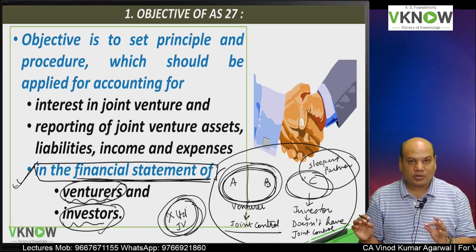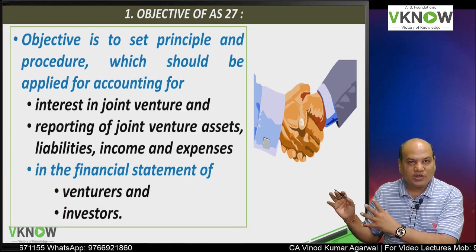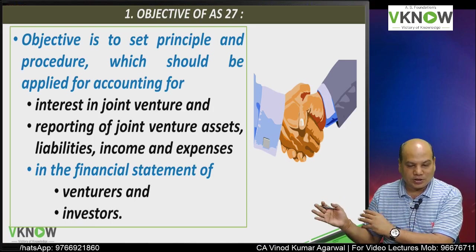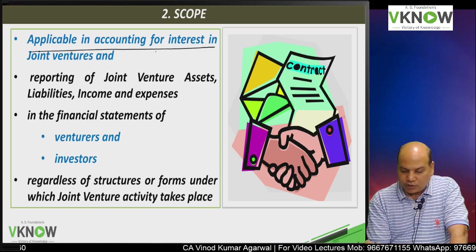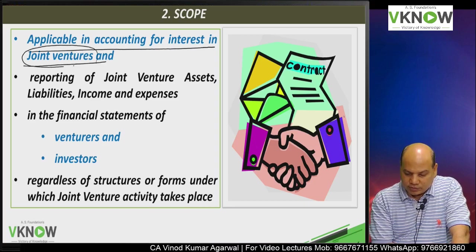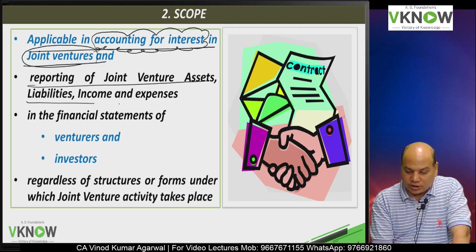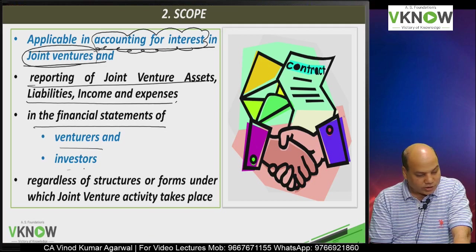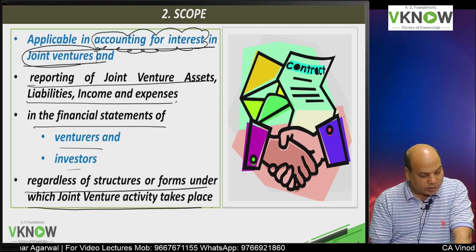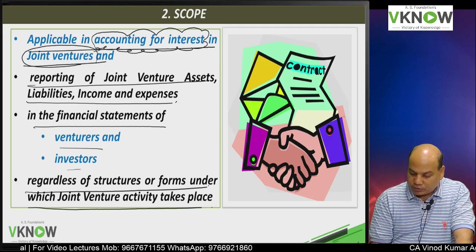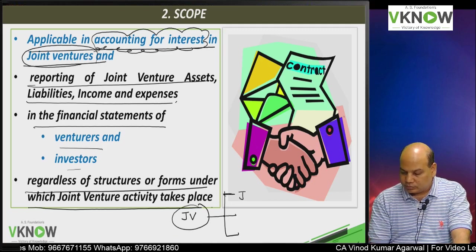If the joint venture is a separate entity, it will follow all other accounting standards. There is no specific standard to be followed by the joint venture entity created by A, B, and C. Next, the scope of the standard: this standard is applicable in accounting for interest in joint venture — how to do accounting of your stake in joint venture, how to report joint venture asset, liability, and income in the financial statements of venturer and investor, regardless of the structure or form the joint venture activity takes. As per the standard, joint ventures are of three types: jointly controlled operation, jointly controlled asset, and jointly controlled entity.